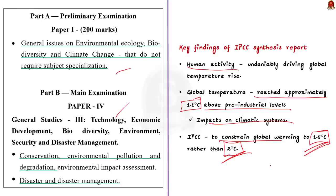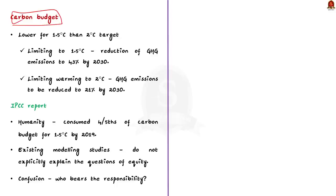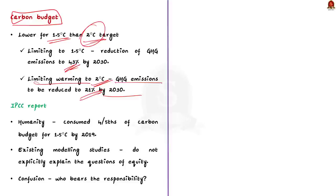The first indication from the focus on 1.5°C rather than 2°C is regarding the carbon budget. The world's carbon budget is far lower for the 1.5 degree Celsius than for the 2 degree Celsius target. Limiting warming to 1.5 degree Celsius requires reduction of greenhouse gas emissions by 43% by 2030, whereas limiting warming to 2 degree Celsius requires greenhouse gas emissions to be reduced by only 21% by 2030. The IPCC report points out that humanity had already consumed four-fifths of its total carbon budget for 1.5 degree Celsius by 2019, and in that consumption, developed economies account for the lion's share.